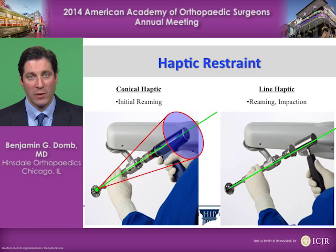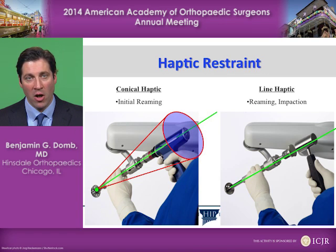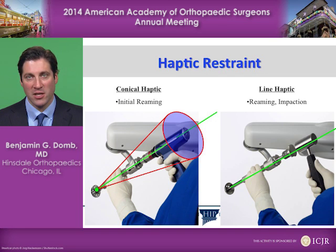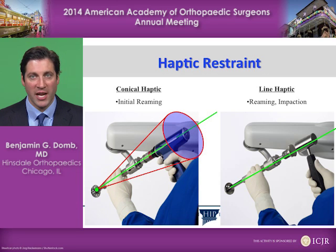The haptic restraints use conical haptics for the reaming. We can actually ream from a variety of different approaches, but all the while it keeps the basket in the desired location in space. When we go to the impaction of the cup, it switches over to linear haptics, keeping us in the direct line of approach that will produce the version and inclination that we've templated.